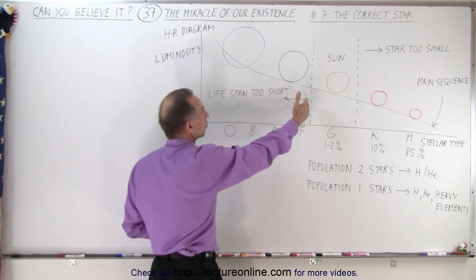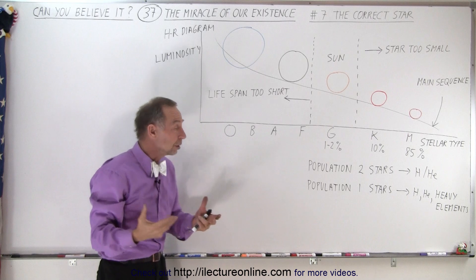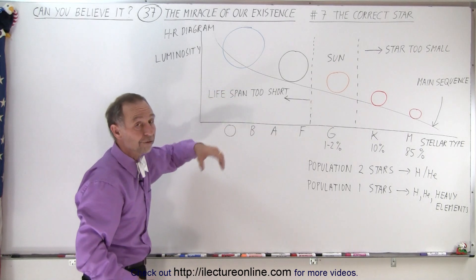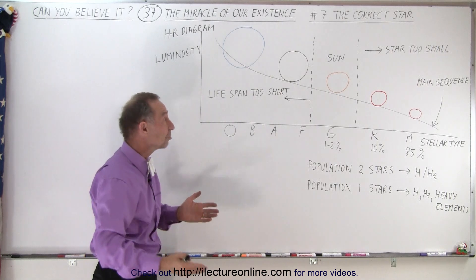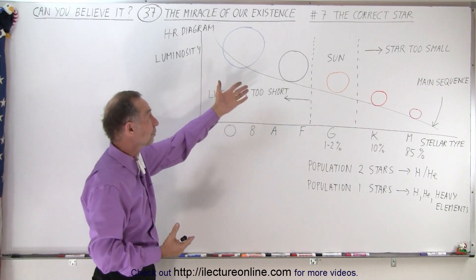So it is not likely you'll see a terrestrial planet around one of these stars that will be able to harbor life. On top of that, these stars are very hot and put out copious amounts of ultraviolet radiation, which again is deadly towards life and would make it difficult for life to exist.